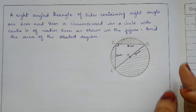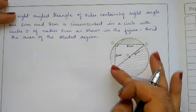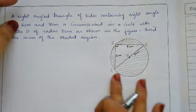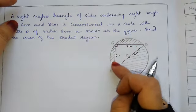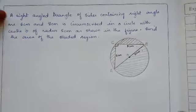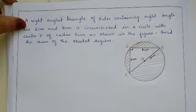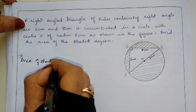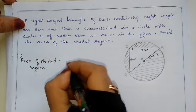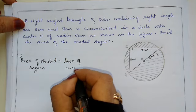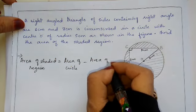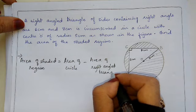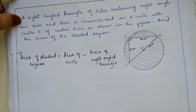Since the right angle triangle is circumscribed in the circle, to find the shaded region we remove the triangle from the circle. So area of shaded region equals area of circle minus area of right angle triangle. First we find the area of the circle, since radius 5 cm is given.